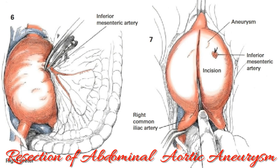The common iliac arteries are then exposed on their anterior, lateral, and medial surfaces in preparation for clamp placement. It is not necessary to encircle these vessels completely, as dissection posteriorly can result in troublesome hemorrhage from the underlying iliac vein. During iliac artery exposure, the ureters are identified and protected from injury throughout the procedure. Certain grafts previously required pre-clotting; however, this is not necessary with woven grafts, knitted grafts sealed with collagen or gelatin, or expanded polytetrafluoroethylene grafts. Heparin is then injected systemically or directly into the aneurysm to provide protective anticoagulation for the extremities during aortic clamping.